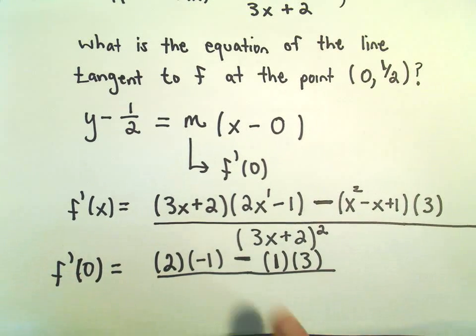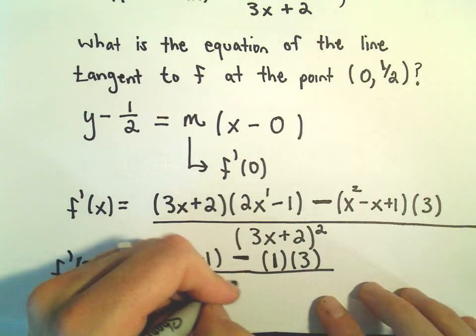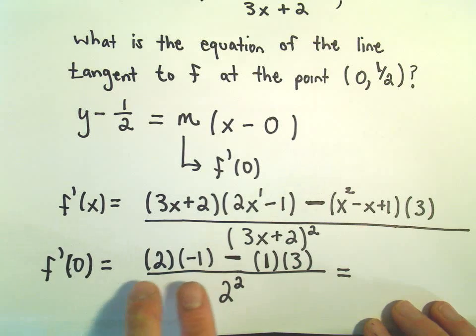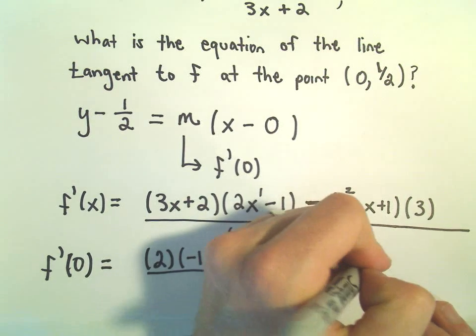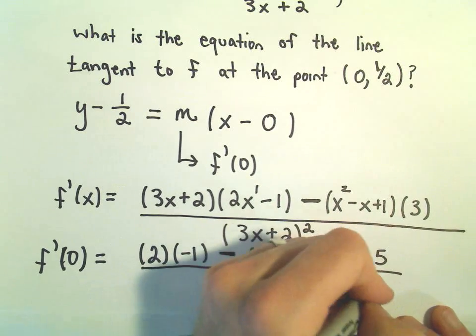And then we'll multiply that by 3. And then in the denominator, well, 3 times 0 is 0 plus 2 squared. So we've got 2² left over. Well, let's see. This is going to be -2 - 3, which looks like -5 to me. And then 2² is 4.